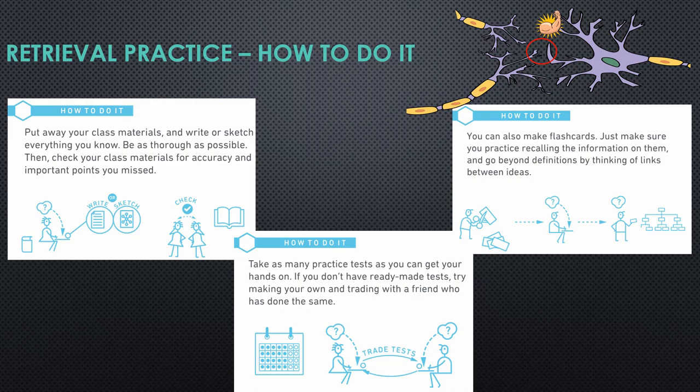A final method of retrieval practice is to make flashcards — write the question on one side and the answer on the other. It's really important that you don't just read the question and then immediately turn the flashcard over and read the answer. You need to think about what you remember for that answer before you check it, because if you don't, you're not practicing getting information out of that synapse.